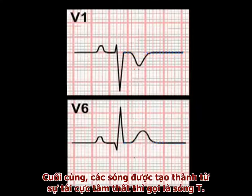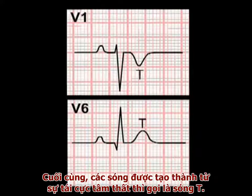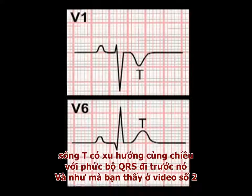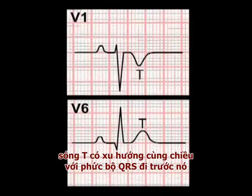Finally, the diffuse deflection produced by ventricular repolarisation is termed a T-wave. And as we've seen in video 2, the T-wave tends to be concordant with the preceding QRS complex.